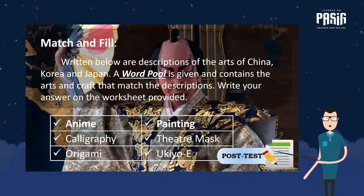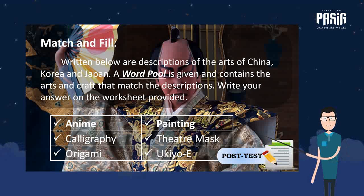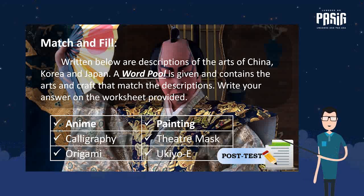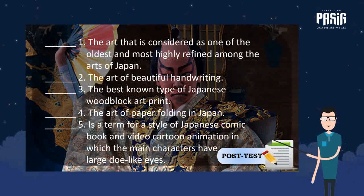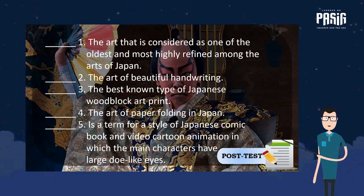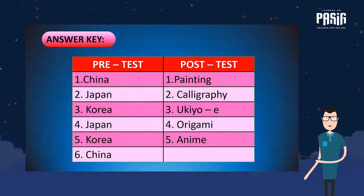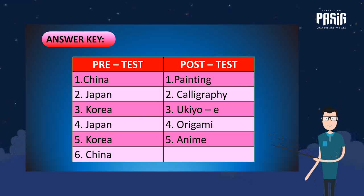For our post-test entitled 'Match and Fill,' written below are descriptions of the arts of China, Korea, and Japan. A word pool is given and contains the arts and crafts that match each description. Write your answer on the worksheet provided. Here's your reference to verify if your answers are correct in the pre-test and post-test. Have fun and good luck!